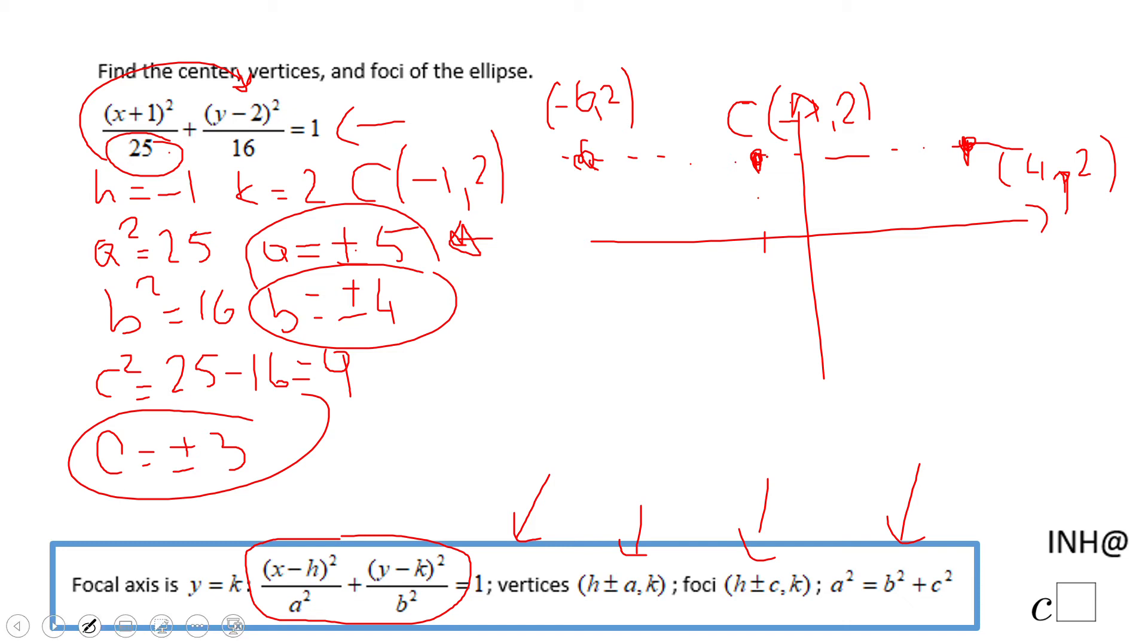x equals negative one, we're going to be at negative one and six. And four down you're going to be somewhere here that will be negative one and two minus four, negative two. And this is a sketch of the ellipse.